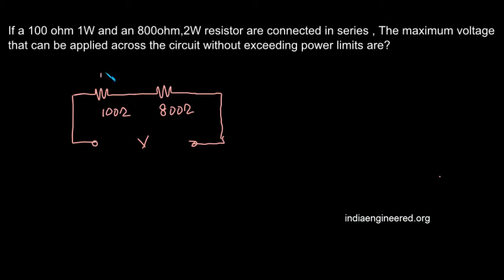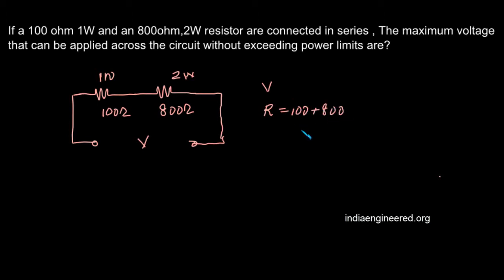The 100 ohm resistor can handle a maximum power of 1 watt and the 800 ohm resistor a maximum power of 2 watts. When we apply a voltage V across the circuit, the total resistance is 100 plus 800, which is 900 ohms. The current will be V divided by 900 ohms.